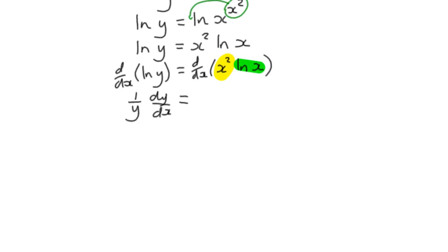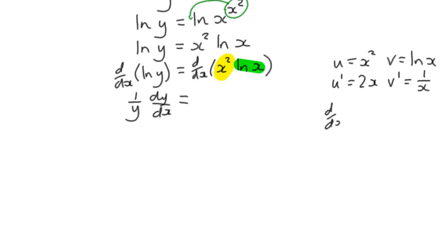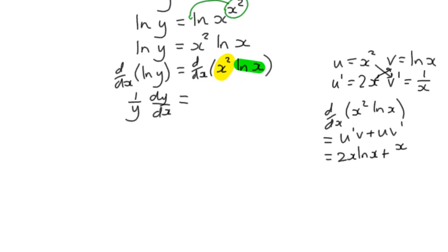So we're trying to differentiate this — you can do it in the problem or at the side. If we say that u is x squared and v is the log of x, then the derivative of u is 2x and the derivative of v is 1 over x. Therefore, the derivative of x squared times log of x is u' v plus u v', which becomes 2x times log x plus x squared over x, which simplifies to 2x times log x plus x, because the x squared and the x cancel down.